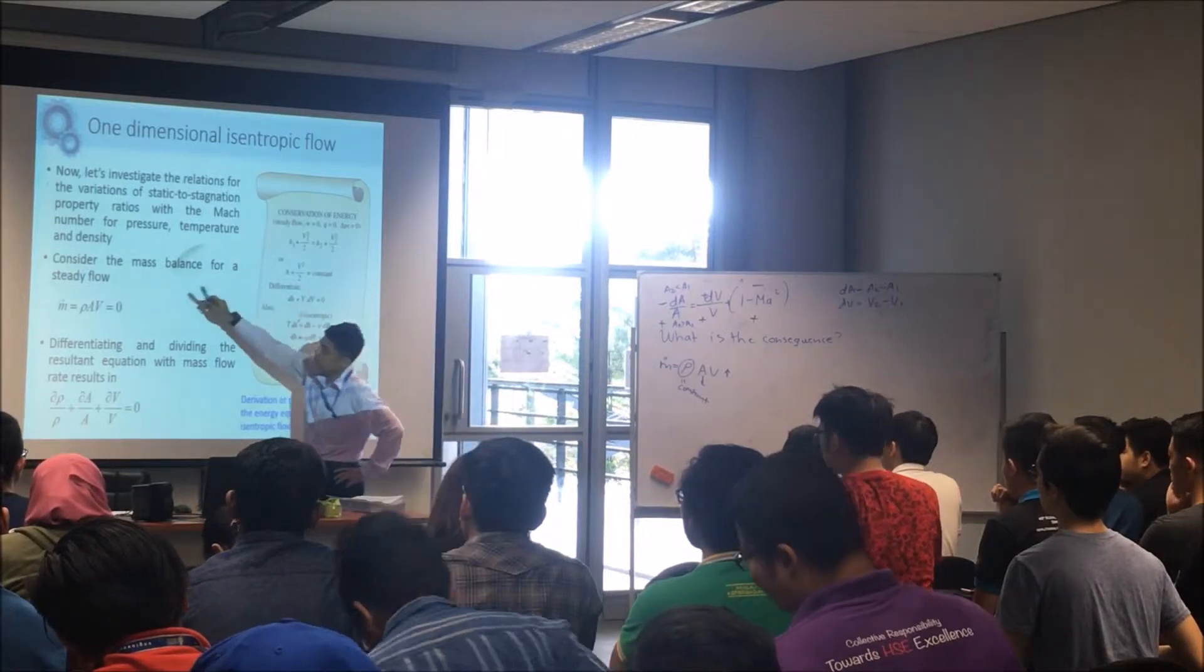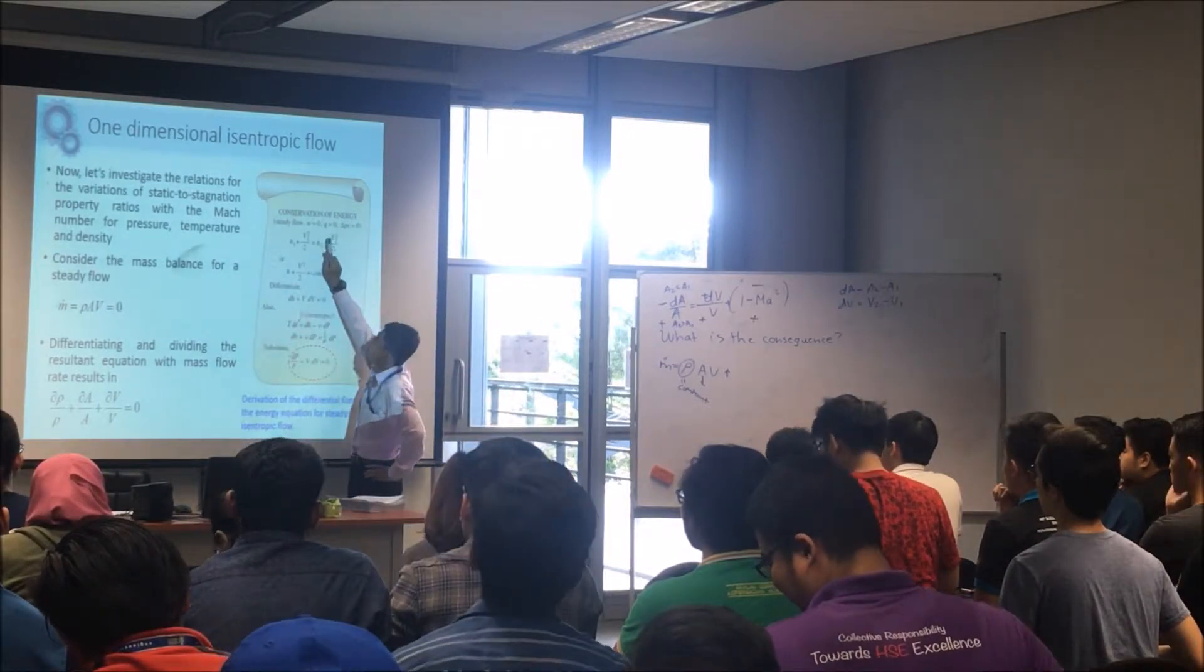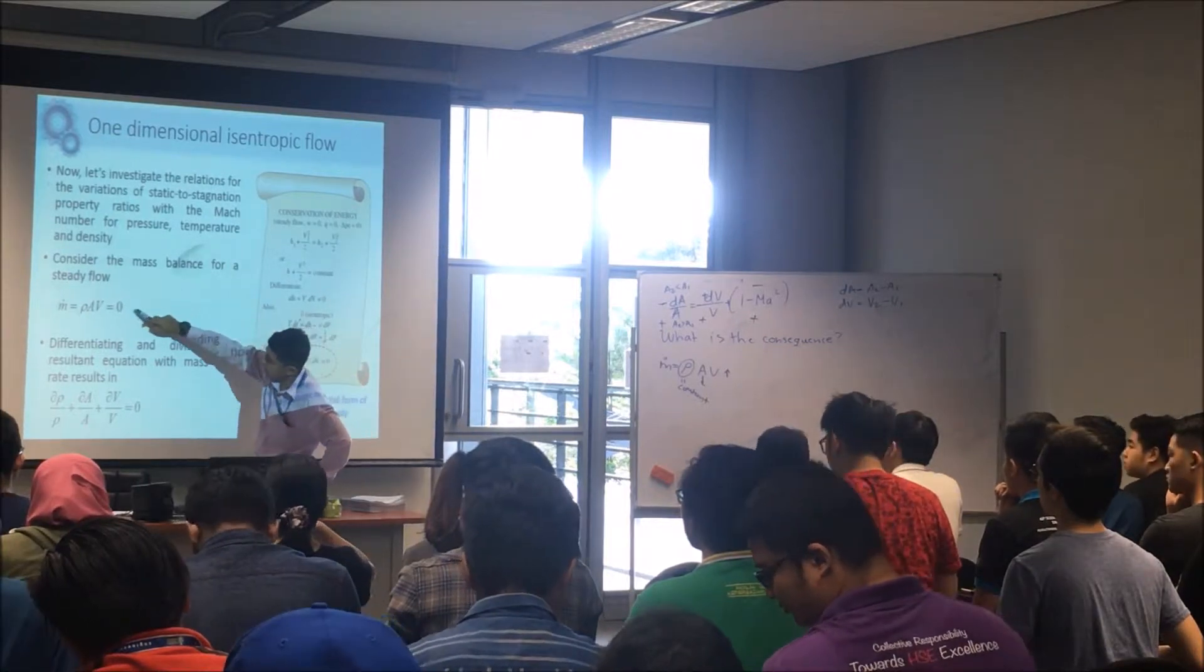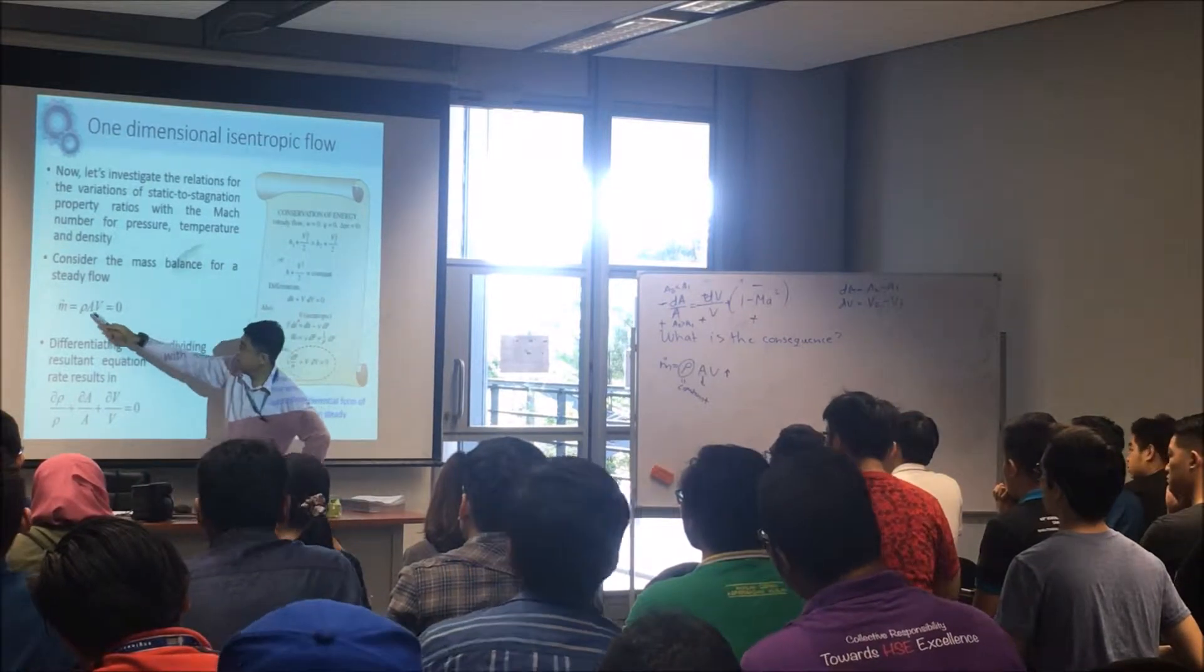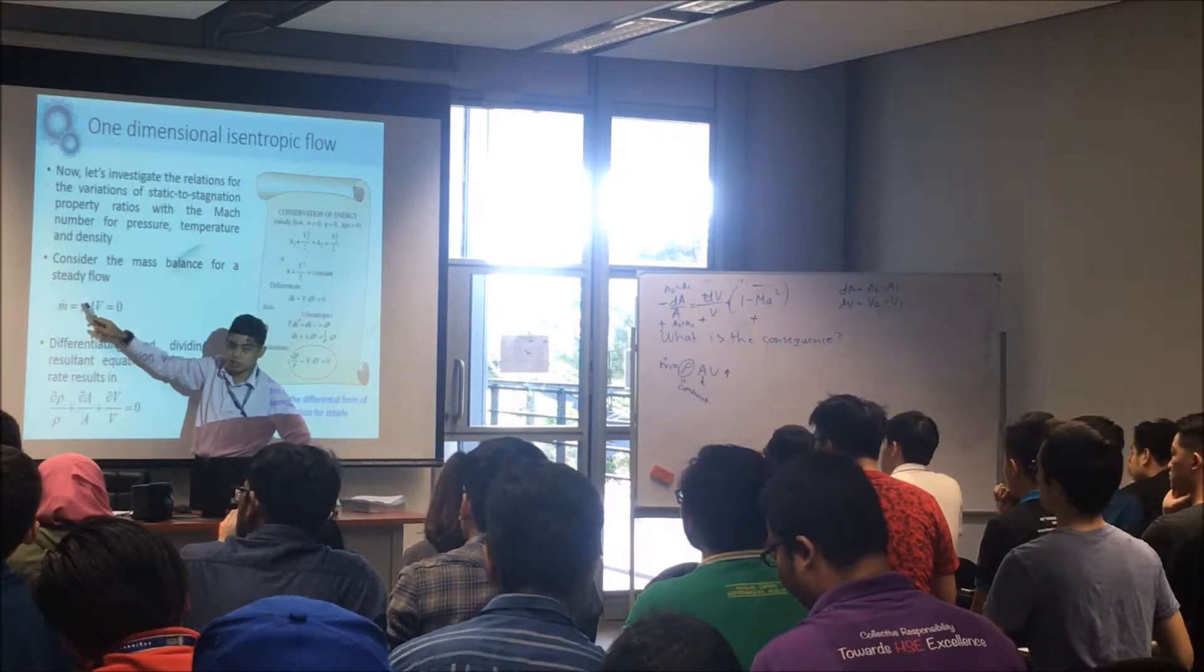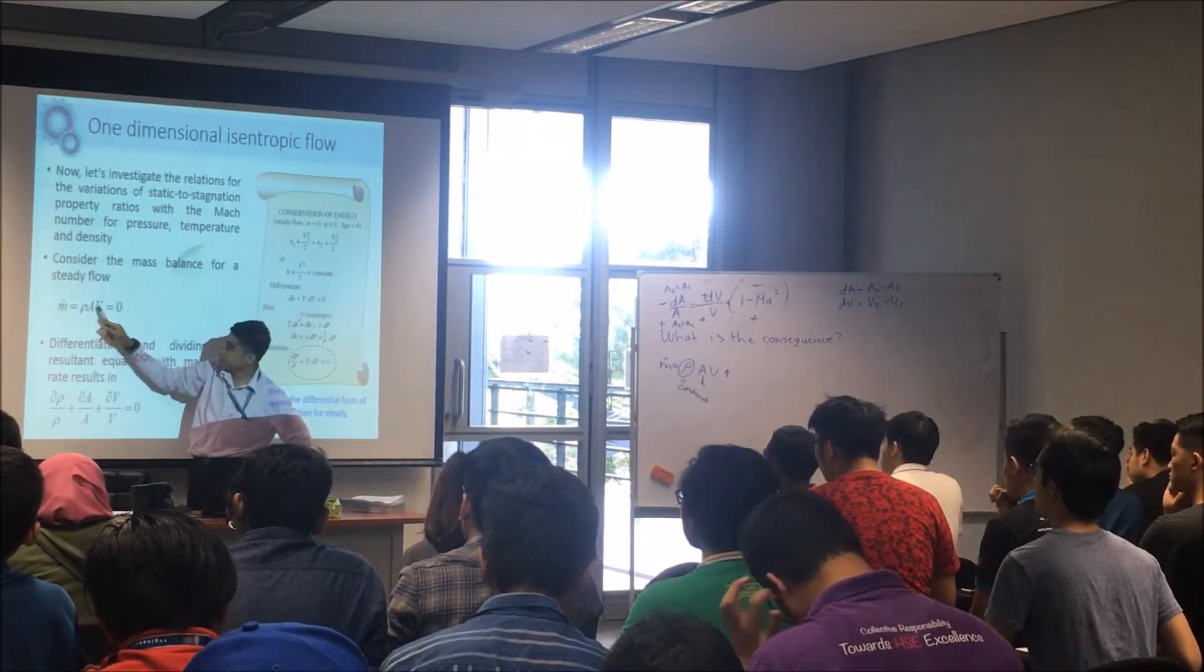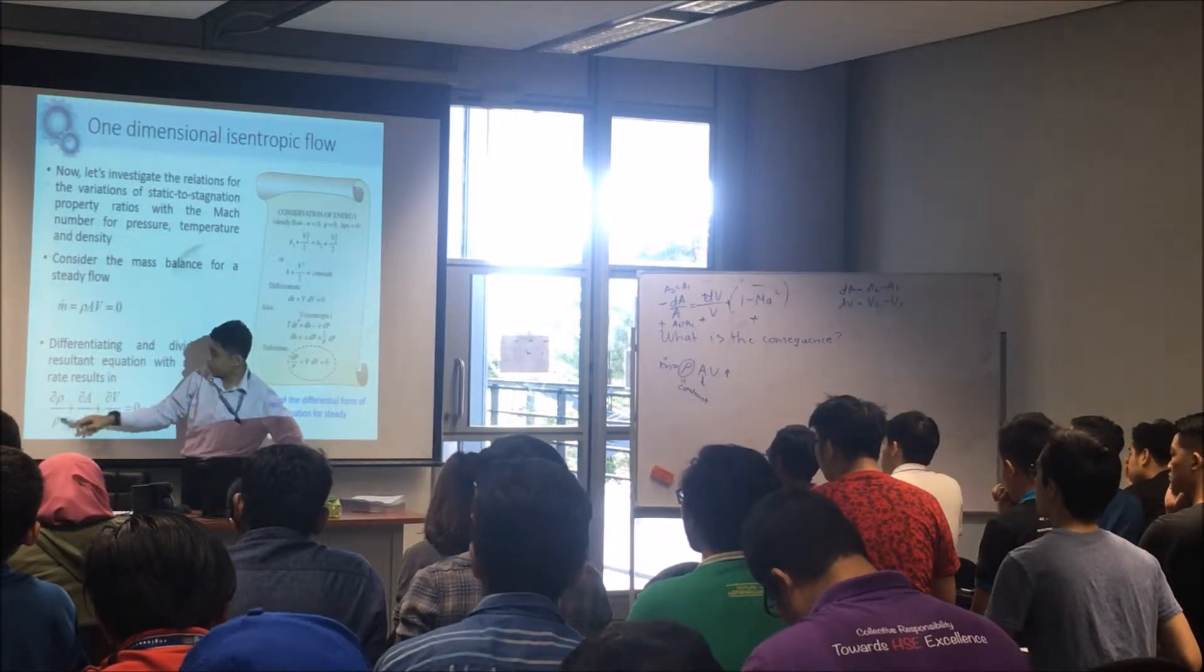So you have conservation of mass and conservation of energy. For the conservation of mass, if you take the derivation of it, you take the partial derivation, we get the derivation between A, V, rho, and if you take a partial derivation, you get dV over V plus dA over A plus drho over rho.